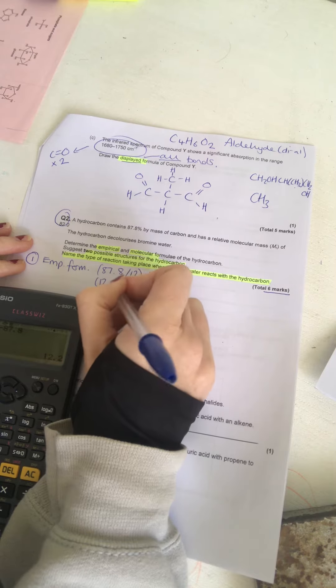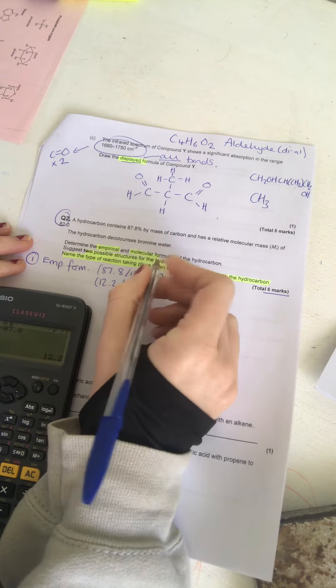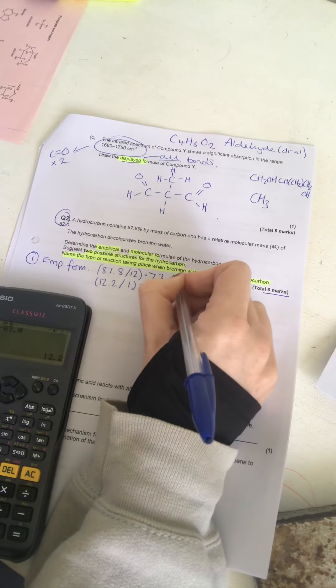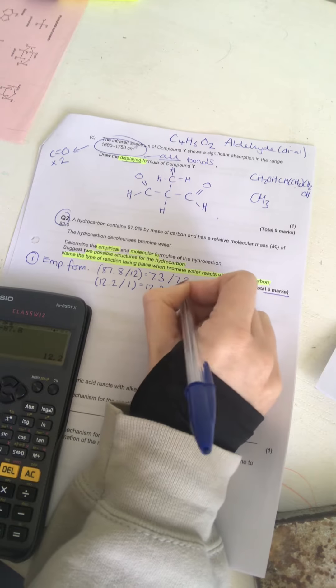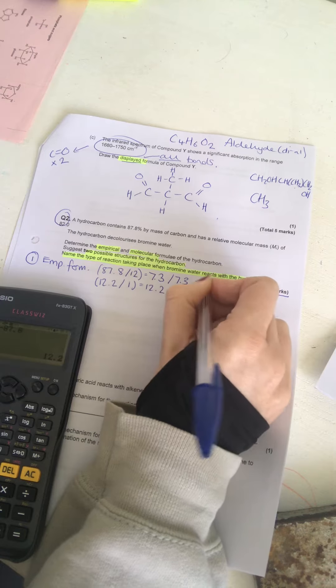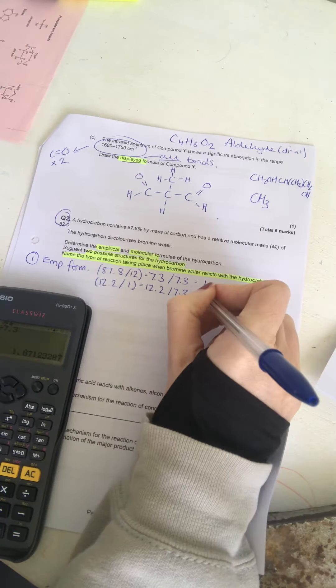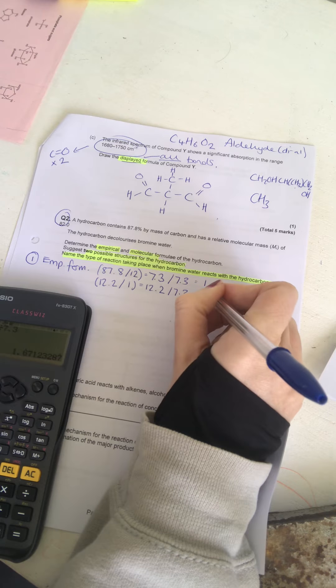So, we've got 100 minus 87.8 is 12.2. So, 12.2 divided by 1, which obviously is the amount of hydrogen, equals 12.2. So, we're then going to divide those numbers by the smallest number, giving you a ratio of 1 to 1.7.